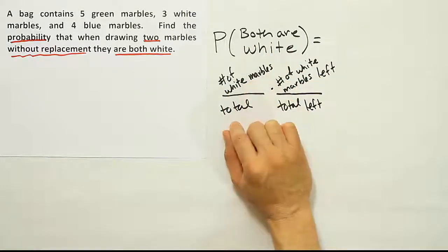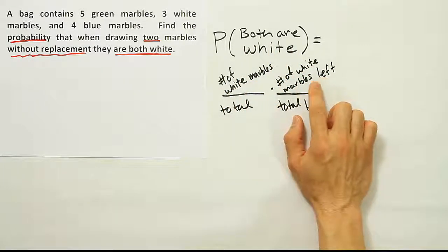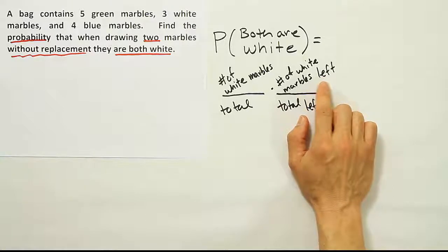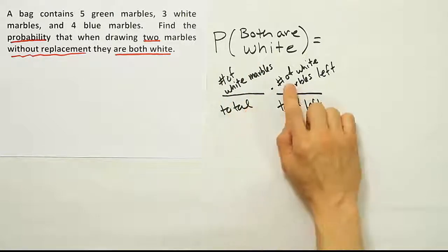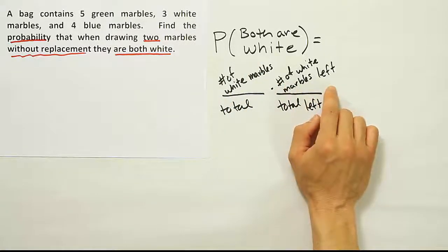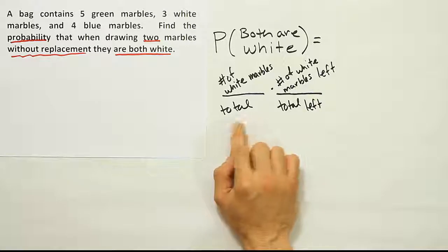So the first time I went in there, I got a white marble. Second time I go in there, it's going to be that I get a white marble, but the probability of that is going to be given that I got a white marble on the first selection. So probability of getting a white marble on the second selection, given that I got a white marble on the first selection.